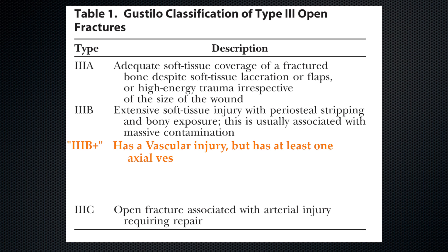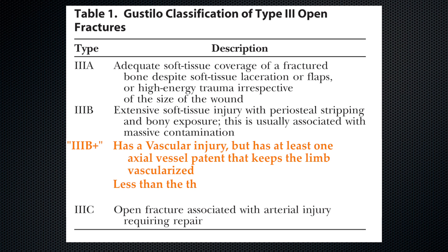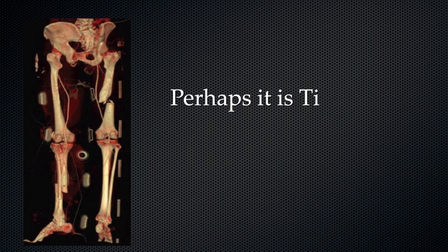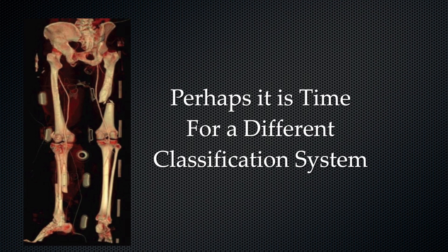The authors suggest a 3B-plus classification that describes less than three vessels in the 3B fracture. I think this is a good addition, but I think even a different classification beyond Castillo-Anderson should be considered. I look to our colleagues in Britain to work with us here in the United States to perhaps come up with a better classification system using parameters of vessels, soft tissue injury, and one that can continue to support the orthoplastic concept and the orthoplastic surgeon in England.